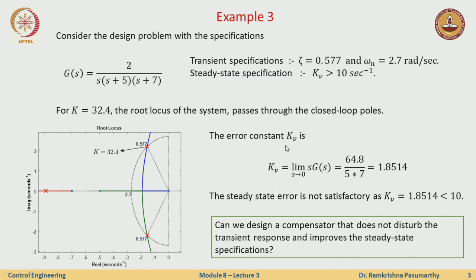Now let us worry about the steady state error. The error constant kv is 1.8 and we want to make it larger than 10. The question is: can we design a compensator such that kv is greater than 10 without altering the existing transient behavior? We want to design a controller that meets the steady state specification without disturbing too much of what is happening in terms of the transient specifications.